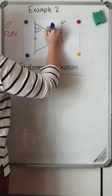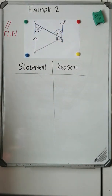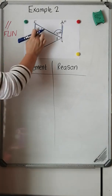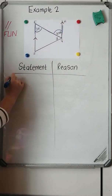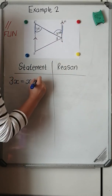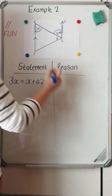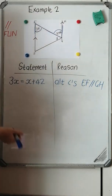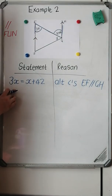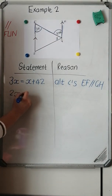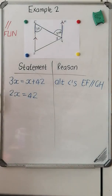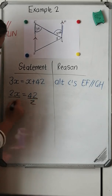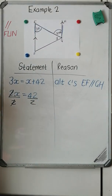I can see a Z shape — alternating angles. And I know that alternating angles are equal to one another. So 3x must equal x plus 42, and that's going to be my statement. My reason is alternating angles, with EF parallel to GH. Solving for x: bring the x over — it becomes minus x — so 3x minus x is 2x equals 42. Dividing both sides by 2, x is equal to 21 degrees.